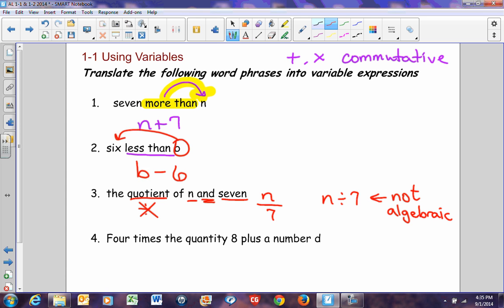Number four, four times the quantity, eight plus a number d. This has two steps to it. The word quantity means there's a group of them. If I have a quantity of water on my desk, that means I have a bunch of water. It may be contained in a water bottle. I may have several water bottles. But I have more than one drop of water on my desk.